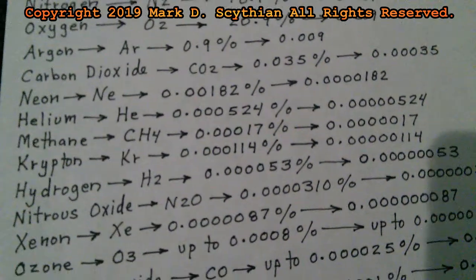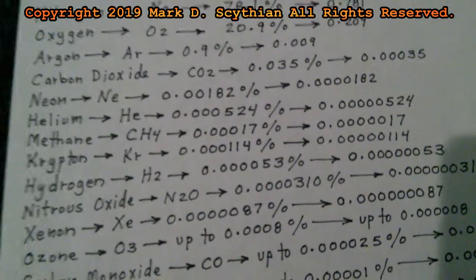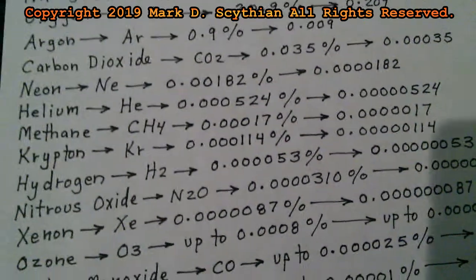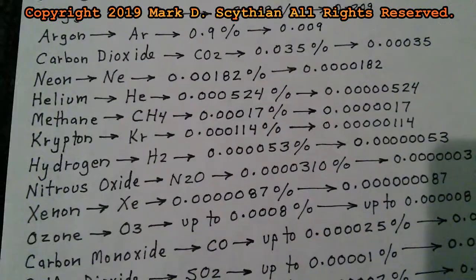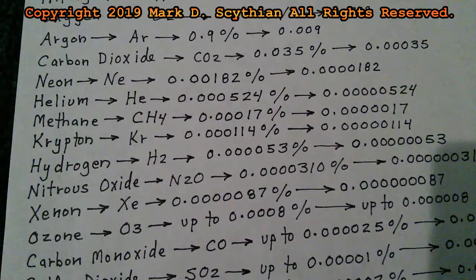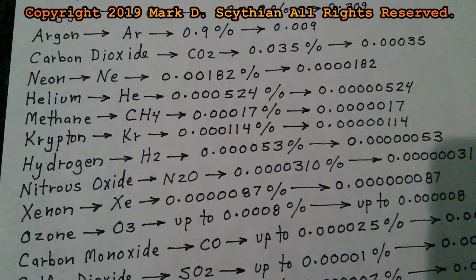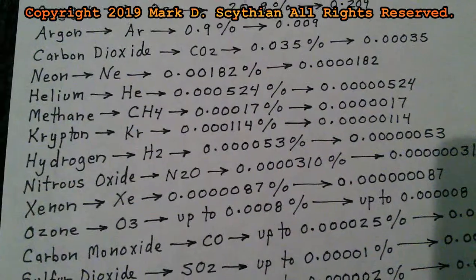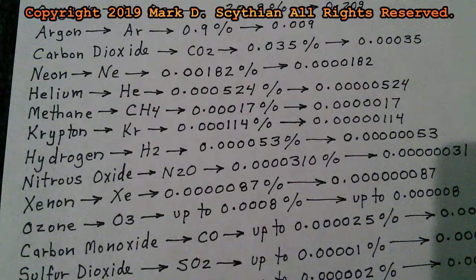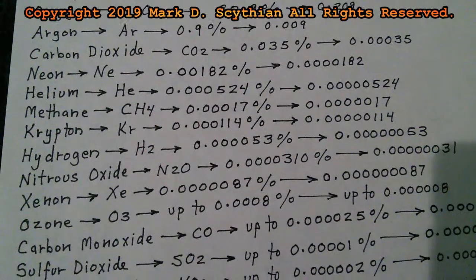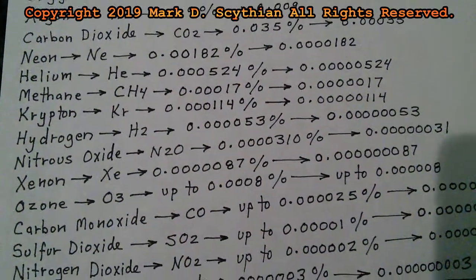And they are the following below nitrogen and oxygen. As you can see, the percentages and the decimal equivalent composition of air as inert gases and elements are listed below.